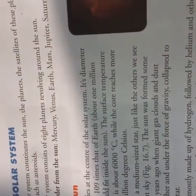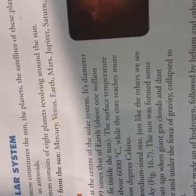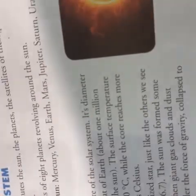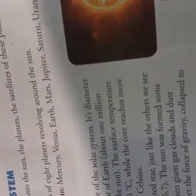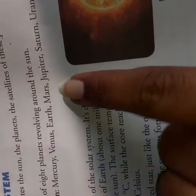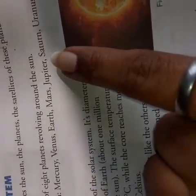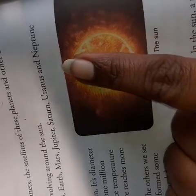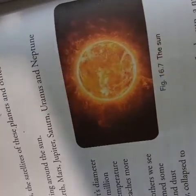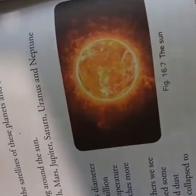The solar system consists of eight planets from the sun. First is Mercury, second is Venus, third is Earth, fourth is Mars, fifth is Jupiter, sixth is Saturn, seventh is Uranus, and eighth is Neptune.